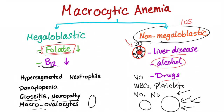In alcoholism, the MCV is usually around 100 to 110 — still macrocytic. You have vacuolization of the precursors of RBCs, with many vacuoles present in the bone marrow. The precursors stay in the bone marrow. Is alcoholism-related macrocytosis reversible? Yes. If you stop drinking alcohol, the macrocytosis and big cells will eventually disappear, and you can reverse the anemia by stopping alcohol.